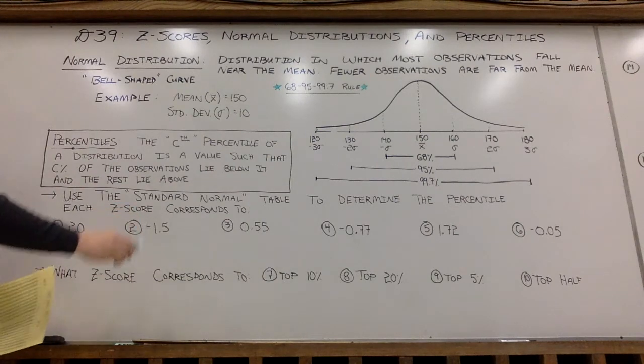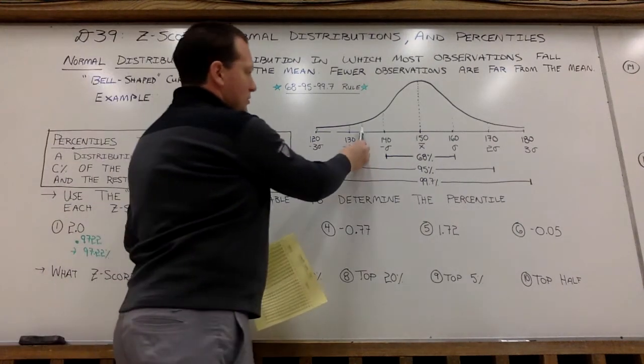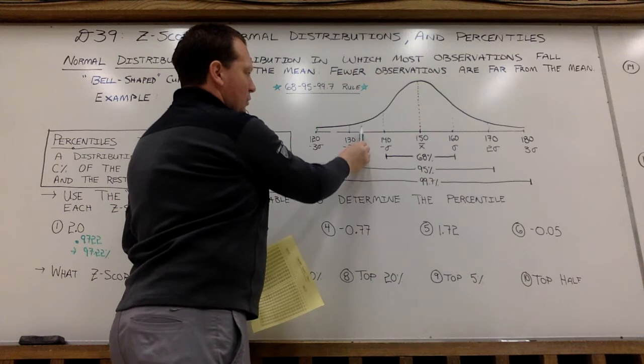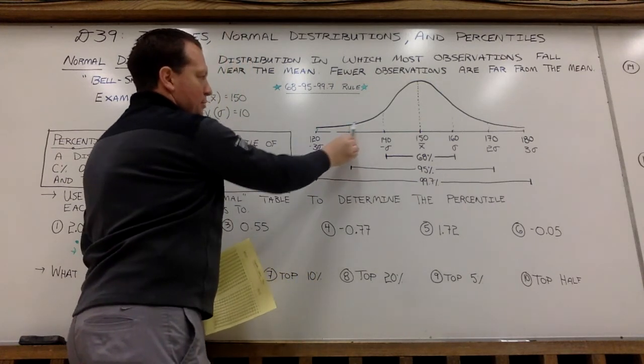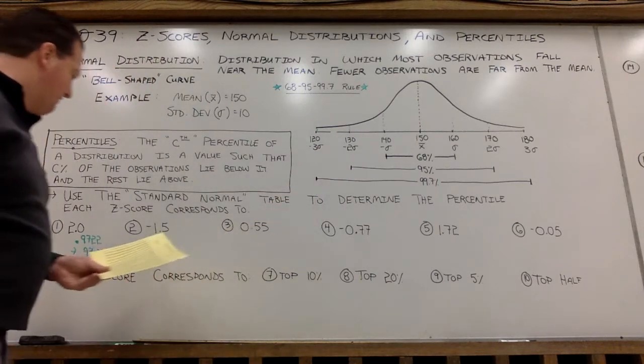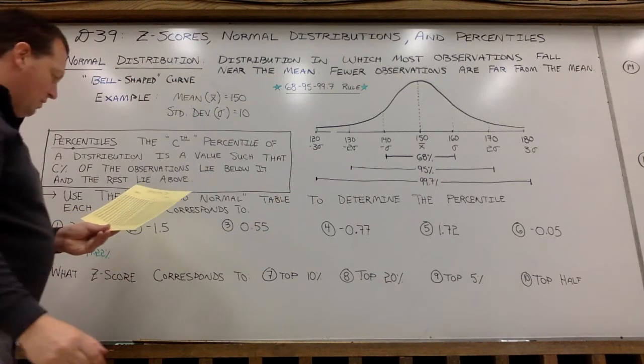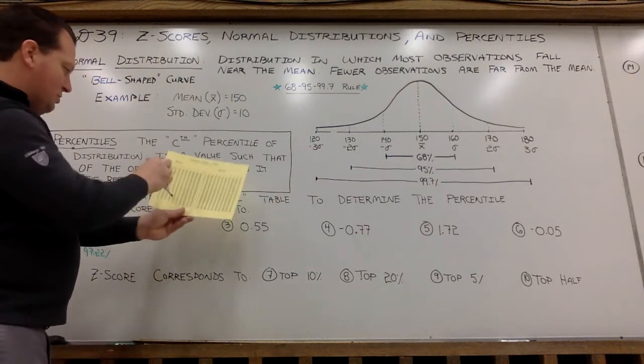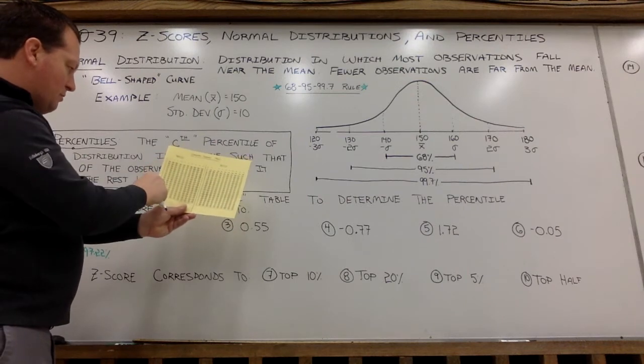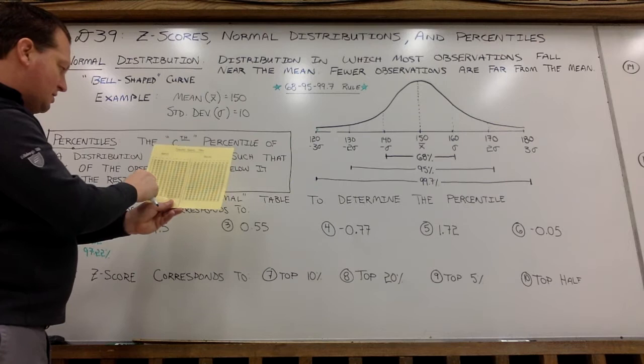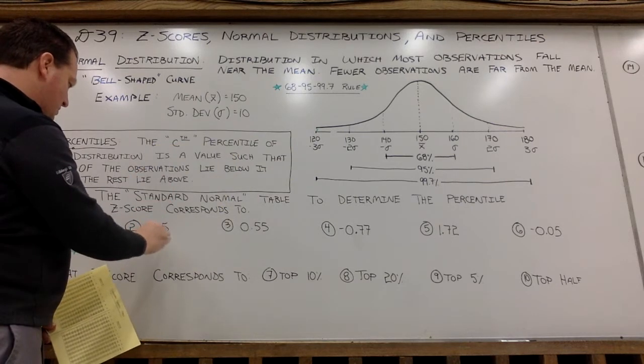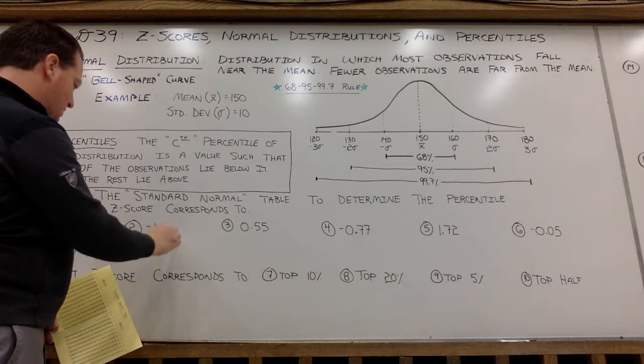So negative 1.5 z-score, so I'd be right here at 135 if I go back to my prior example. So I want to find the area below 135. So negative 1.5, I'd go to on the negative side, negative 1.50 is 0.0668. So as a percent, that would be 6.68%.